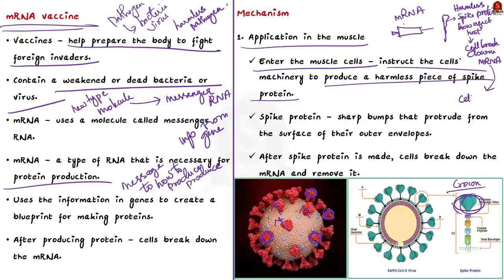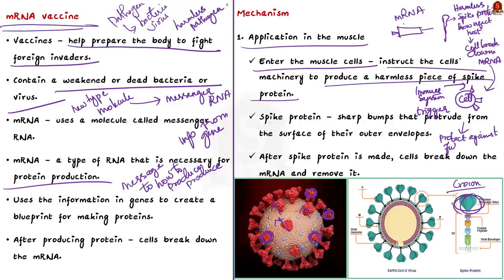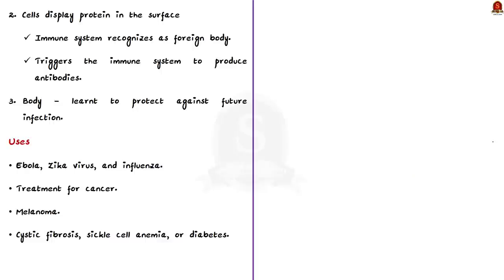Next, the cells display the spike protein piece on their surface. The immune system recognizes that the protein doesn't belong there, which triggers it to produce antibodies and activate other immune cells to fight off what it thinks is an infection — similar to what the body would do if fighting off COVID-19. The body has now learned how to protect against future infection from the virus that causes COVID-19. This covers what mRNA is, what the mRNA vaccine is, and how it works.